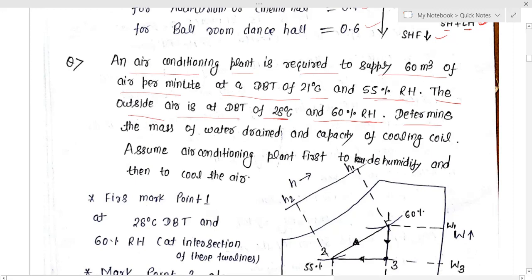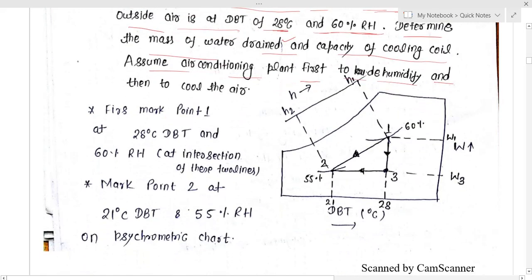We need to determine the mass of water drained and the capacity of the cooling coil. Assume the air conditioning plant first dehumidifies and then cools the air. To solve this, you need a psychrometric chart. First, mark point 1 on the chart at 28 degree centigrade dry bulb temperature and 60% relative humidity.